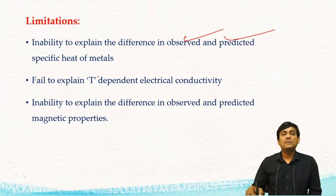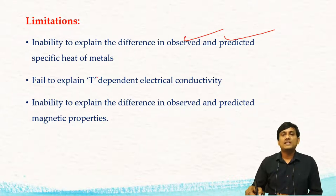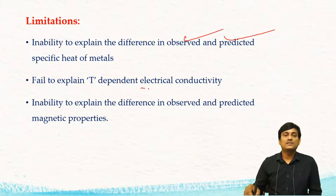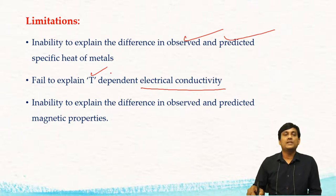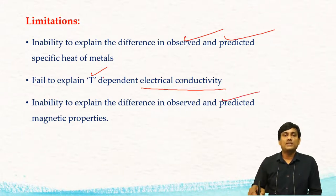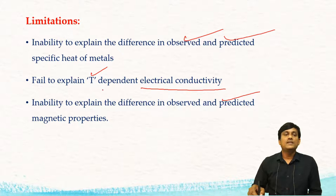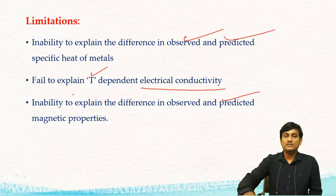And also it failed to explain temperature-dependent electrical conductivity. It explained the reason for electrical conductivity, but why there is a decrease in electrical conductivity with increase in temperature was not explained by this theory. And also, there is an inability to explain the difference in observed and predicted magnetic properties — these differences were not explained by the free electron theory.